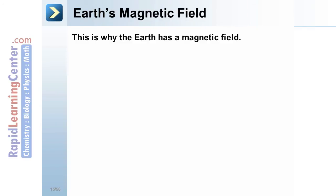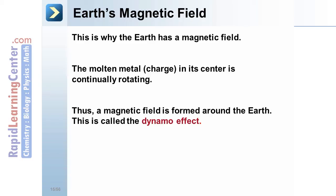Earth's magnetic field. This is why the earth has its own magnetic field. The molten metal charged material in its center is continually rotating. Thus, a magnetic field is formed around the earth due to the movement of this charged material. This is called the dynamo effect.